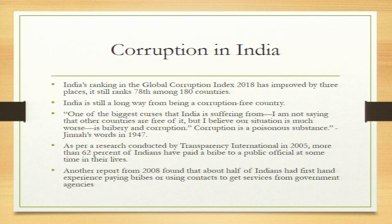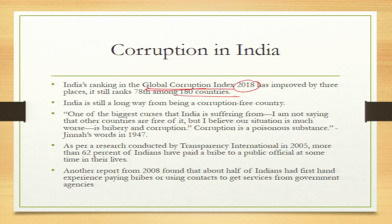Moving on to corruption in India — India ranks 78th position among 180 countries. This global corruption index was made in 2018. India is at the 78th place, and India still needs to improve quite a lot. India has a long way to go for being a corruption-free country, and we will need to work on different types of corruption on different fronts.